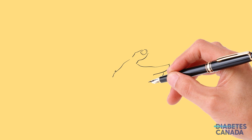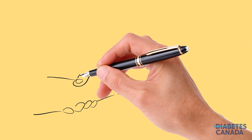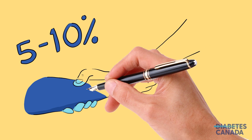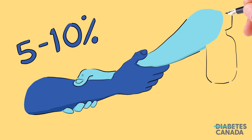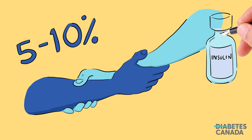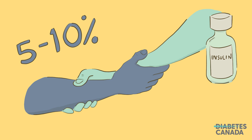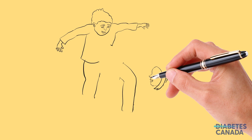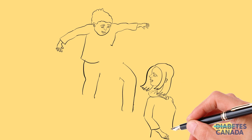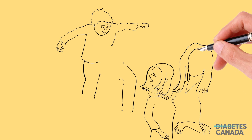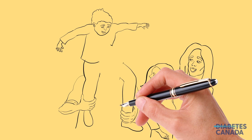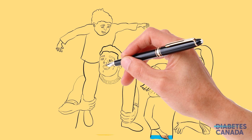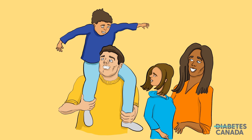Type 1 is an autoimmune condition that accounts for about 5 to 10 percent of all diabetes. In these cases, people are unable to produce insulin. That's why you may have also heard it described as insulin-dependent diabetes. It used to be referred to as juvenile diabetes because type 1 diabetes generally develops earlier in life, in childhood or adolescence, though we know that people can be diagnosed with type 1 at any age, including in adulthood.